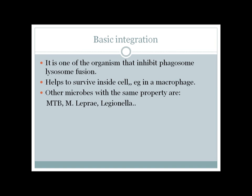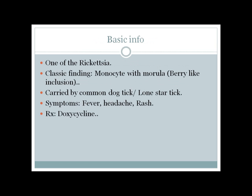To summarize: Ehrlichiosis is one of the rickettsial diseases that less commonly causes rash. The classic finding is a monocyte with a morula, which is a berry-like inclusion. It is carried by the common dog tick or Lone Star tick. Symptoms common to all rickettsia include fever, headache, and rash, and like all rickettsial infections, it is treated with doxycycline.